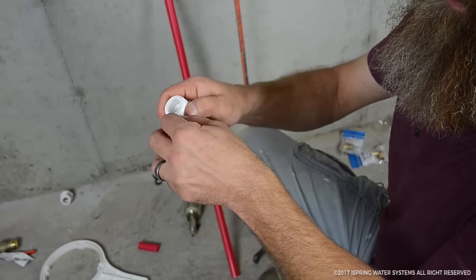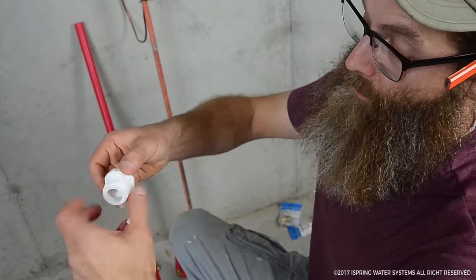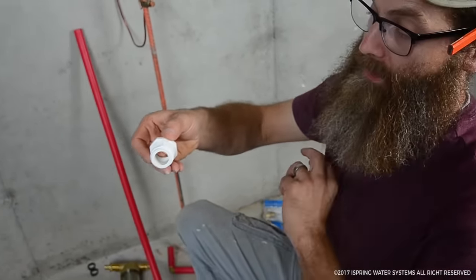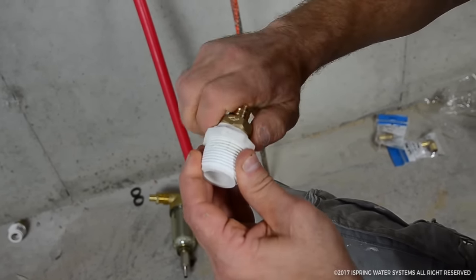The reason I do it in the direction it tightens is if you do it in the other direction, when you tighten, it will actually just spin back out of the threads. So this keeps it, as you're tightening the thread, the fitting in, it stays on the threads.